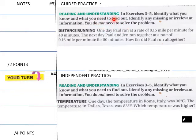And let's get into our guided now. In exercise 3 through 5, identify what you need. And this is 3 through 5 here, I do believe. Identify any missing or irrelevant information. You do not need to solve the problem.